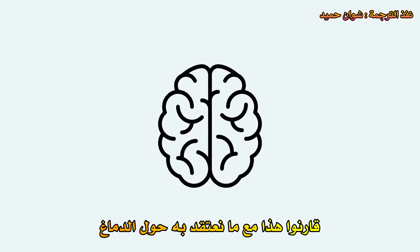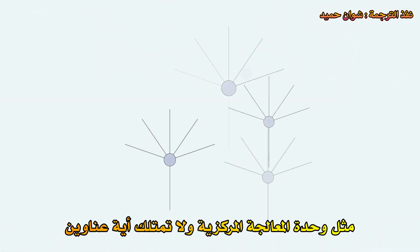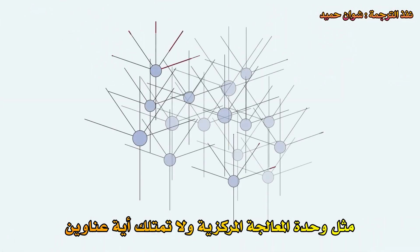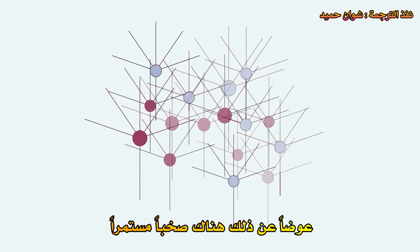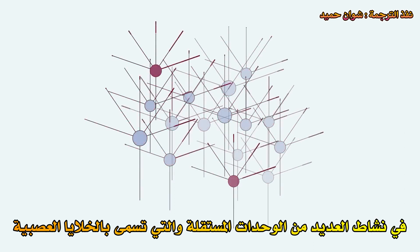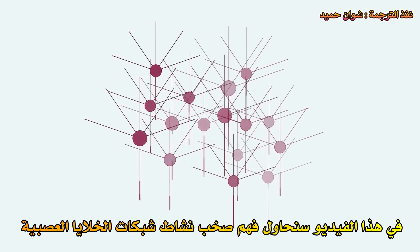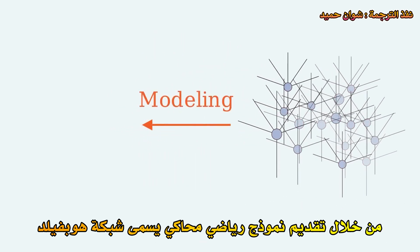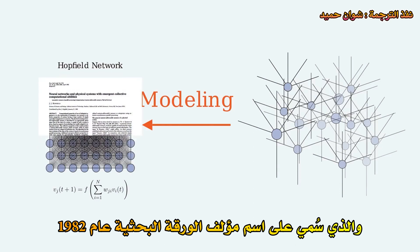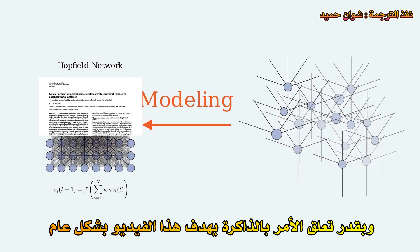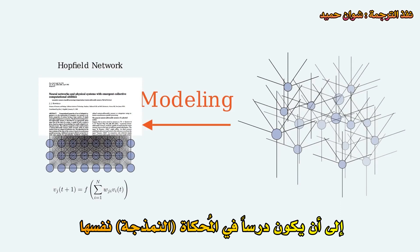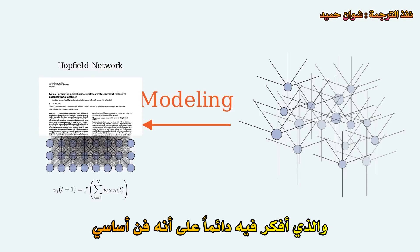Contrast this with what we believe about the brain. There isn't a central orchestrator like a CPU, and there aren't any addresses. Rather, there is a constant buzz of activity of many independent units called neurons. In this video, we'll try to make some sense of the buzzing activity of networks of neurons by introducing a mathematical model called the Hopfield Network, named after the author of this 1982 paper. And as much as this has to do with memory, more generally, this video aims to be a lesson in modeling itself, which I always think of as the art of the essential.